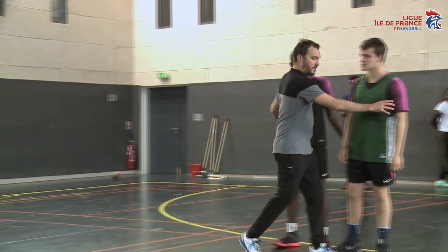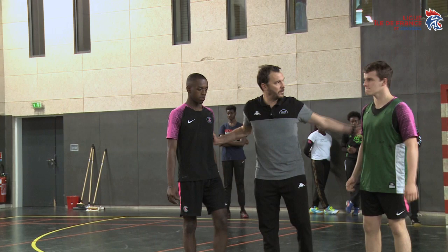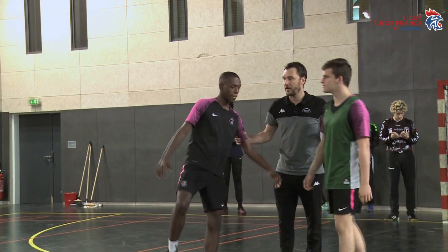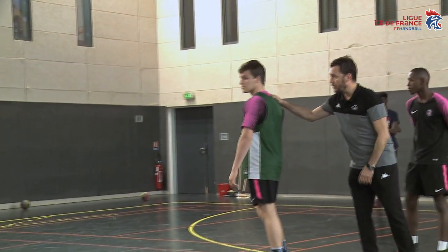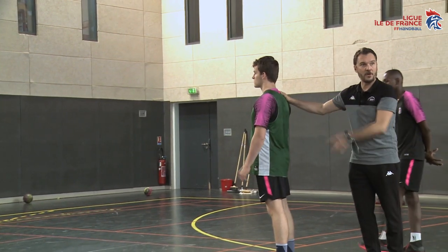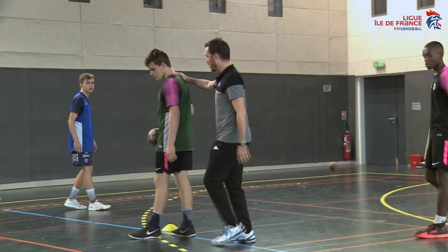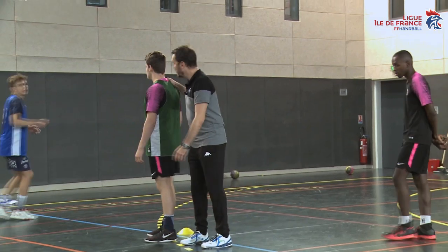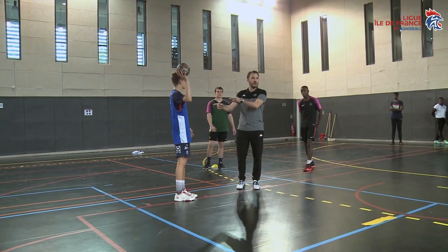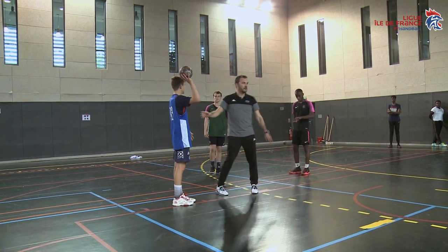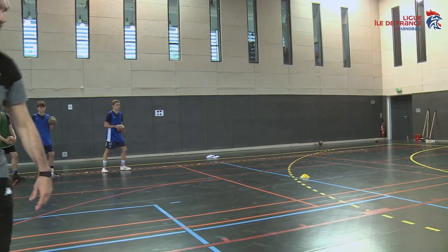Tu pars d'ici. C'est la même situation que tout à l'heure. C'est toi le pivot ? Mets-toi là. Tu vas à l'extérieur, comme tout à l'heure, sur la course à l'extérieur. J'accompagne le pivot avec moi, ici. Tu lui redonnes. Et là, je vais sur l'arrière. Et il y a une place au pivot. Ça marche ?